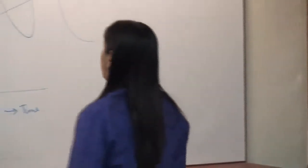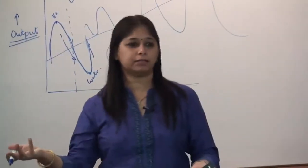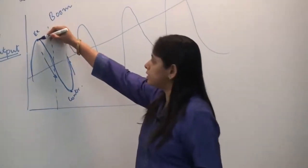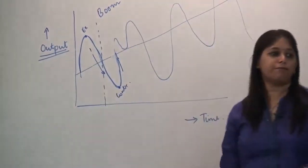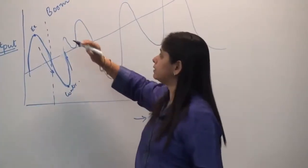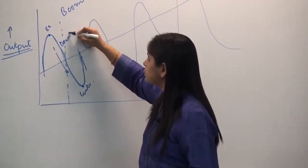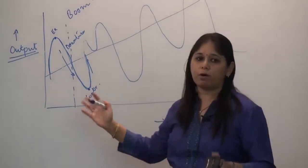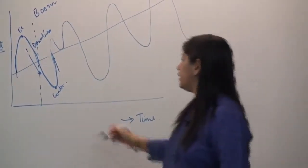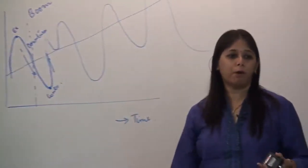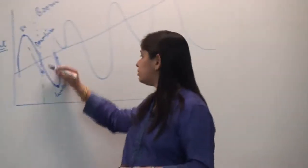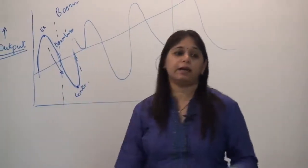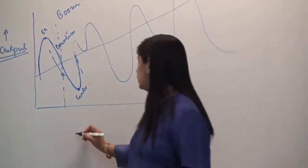After the boom, since it is an alternating phase — whatever goes up will have to come down — after reaching the peak level there is a fall in the business cycle known as the downturn. It will keep going down depending on the situation of various economic variables, until it reaches a low point known as the trough. When this downturn is sustained for a very long period of time, it is known as a recession.